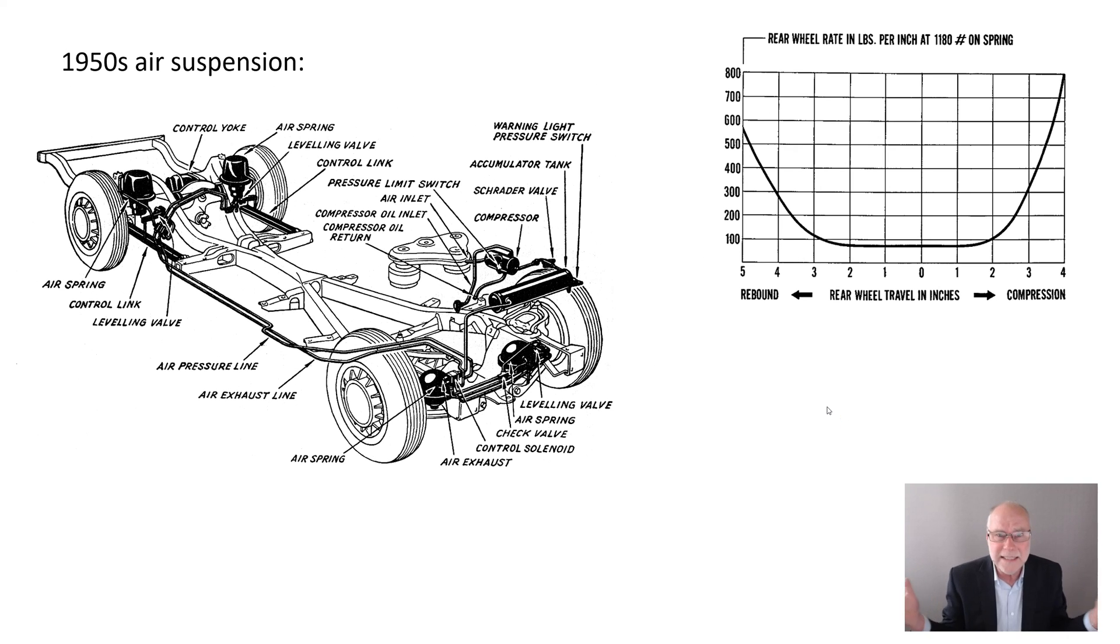So here's an example, 1950s US car air suspension system. Let's have a look at it. It's got a compressor, it's got accumulator tanks, it's got height control valves. Wow, a bit more complex than I thought they had back then.